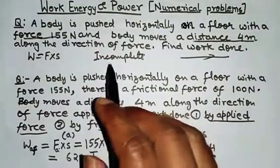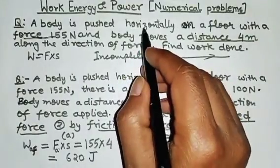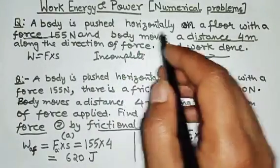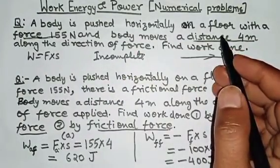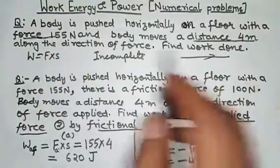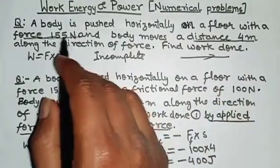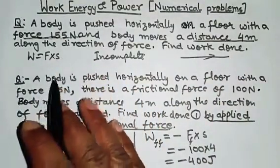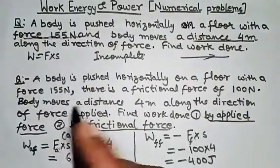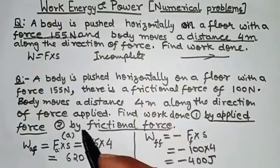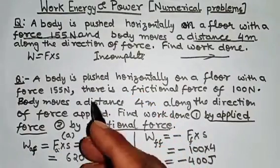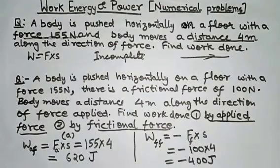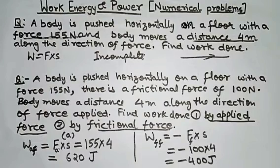One more thing — if the question mentions the floor is frictionless, then there is no frictional force, so you can find that work. But there is still gravitational force acting, so you are still eligible to argue it is an incomplete question. While calculating work done, you must be certain about which force the work is related to.